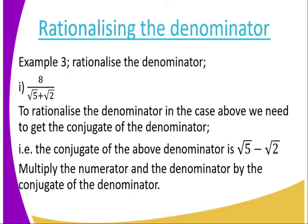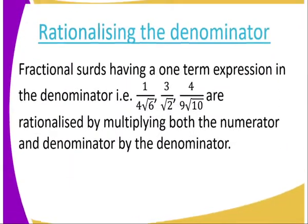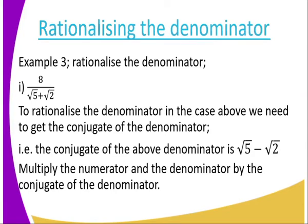So we multiply both the numerator and the denominator by the conjugate. After multiplying by the conjugate, the denominator becomes a natural number — it doesn't have a surd. Since root five times root five gives five, and root five times root two gives negative root ten. So finally we get negative root ten, positive root ten, then two. So finally the denominator is three. That is what happens when it comes to rationalizing the denominator.